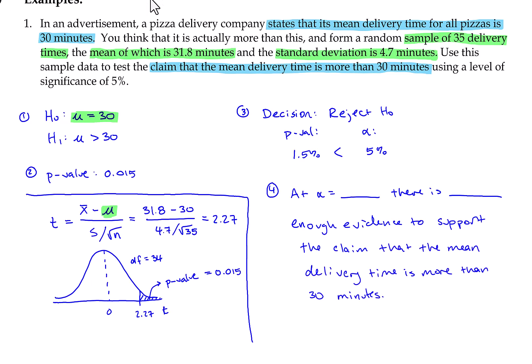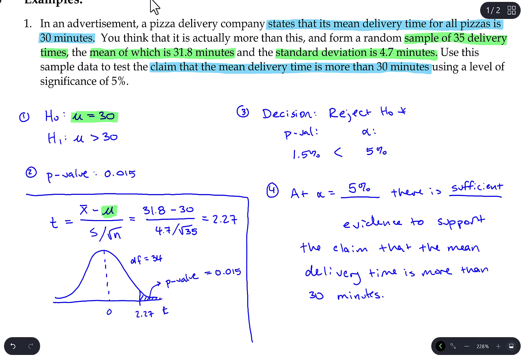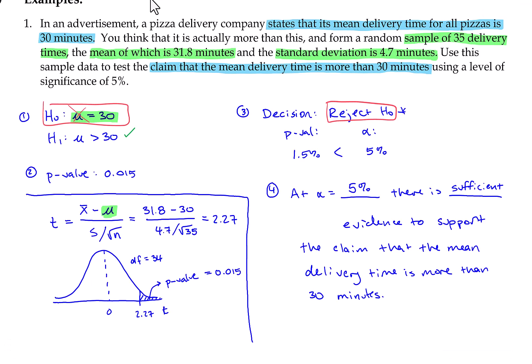At alpha equals 5%, because we rejected the null hypothesis, we say there is sufficient evidence to support the claim that the mean delivery time is more than 30 minutes. Because we rejected the null hypothesis, we said the advertisement's statement is false, which leads the alternative claim to be true. So we are supporting the claim that the mean delivery time is more than 30 minutes.